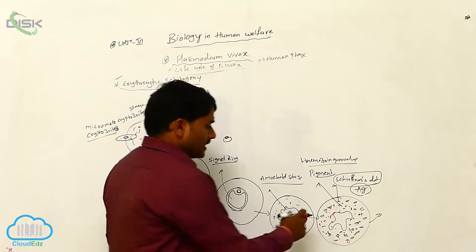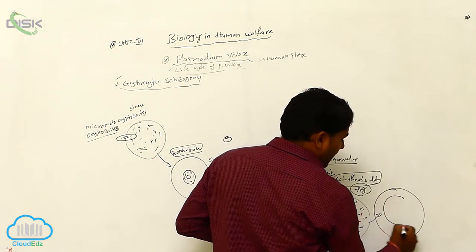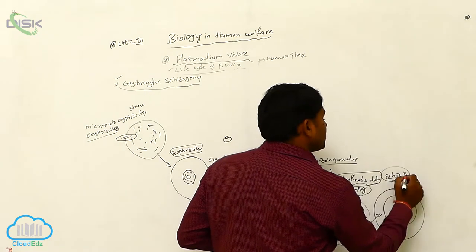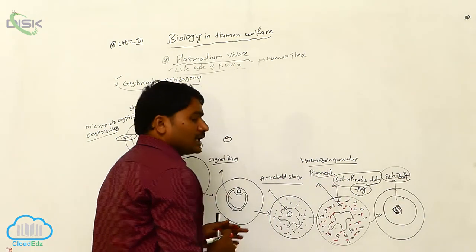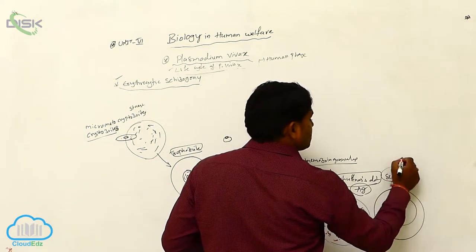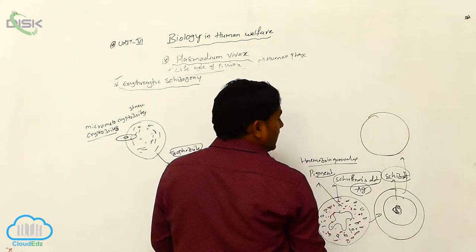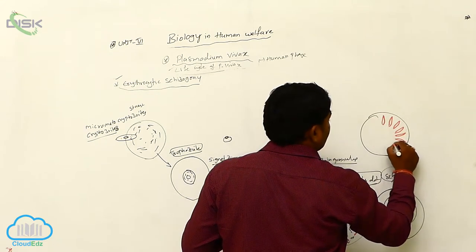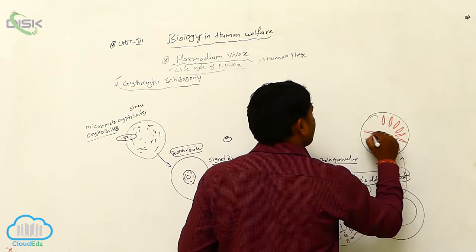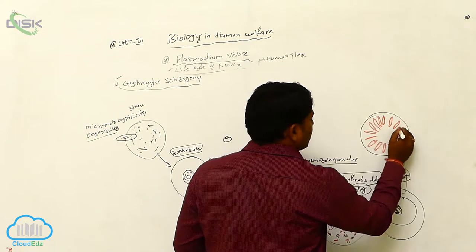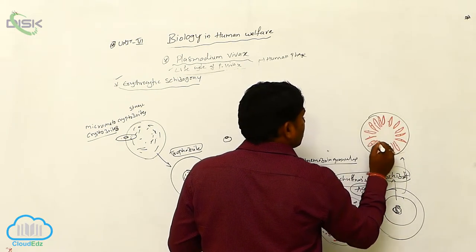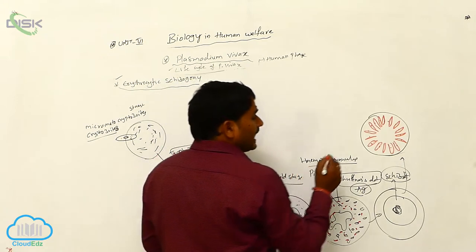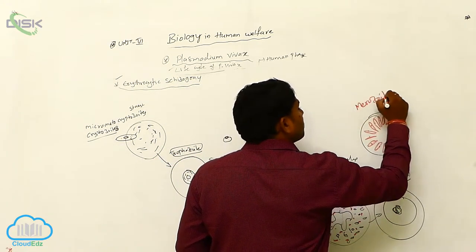After continuous eating, the amoeboid stage loses pseudopodia and it develops into a big structure called as schizont. This schizont undergoes divisions, and 12 to 24 nuclei are formed by the division of the nucleus of the schizont. These 12 to 24 nuclei receive some cytoplasm and they are developed into erythrocytic merozoites.